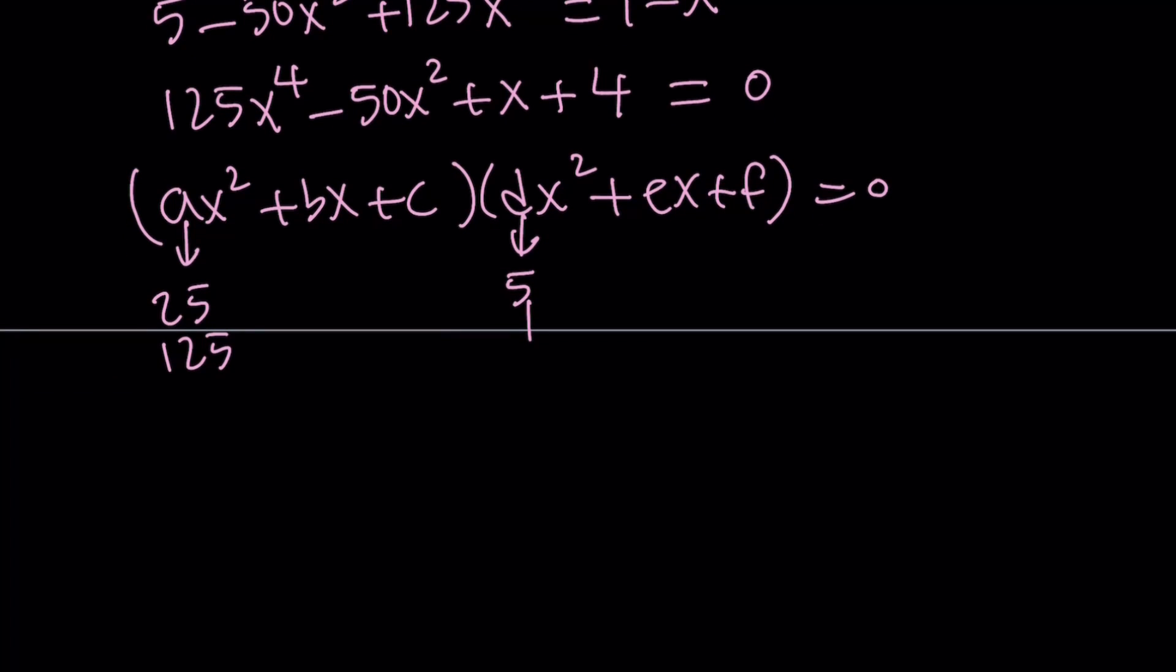These are the only two choices, because 125 is 5 to the third power, and you can only factor so much. We can try these, and at the end, we're going to get something nice. Because one thing we need to know is the x cubed is going to cancel out. That means ae plus bd is 0. That gives you an additional equation that you can use. So that's an idea, and definitely you can use this.